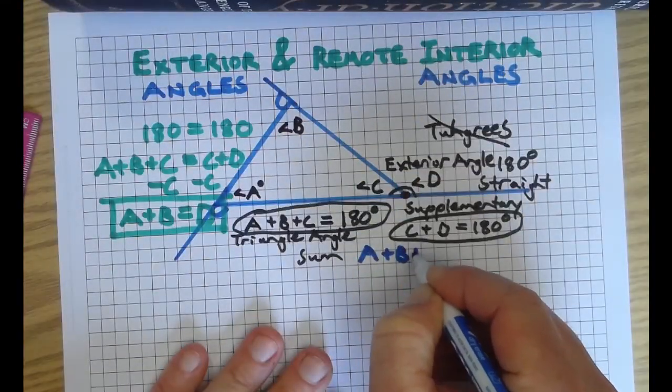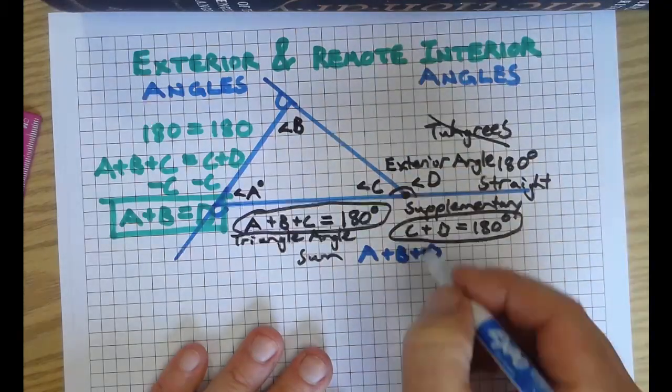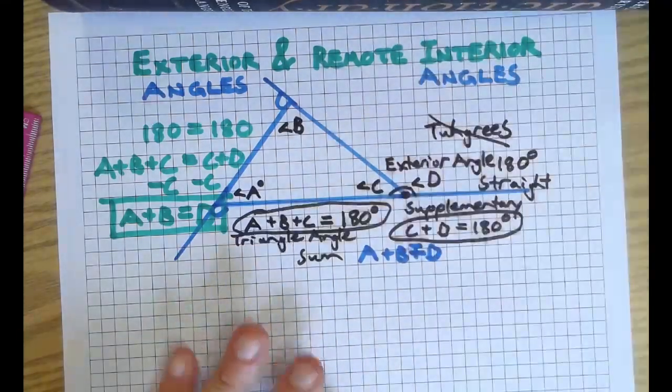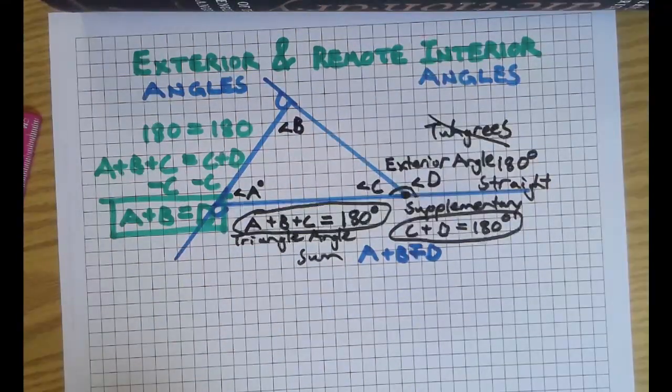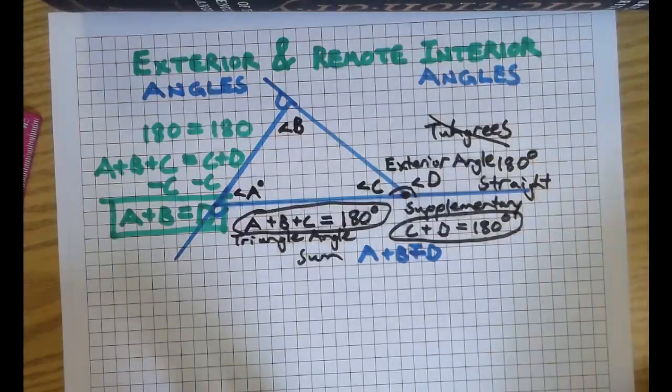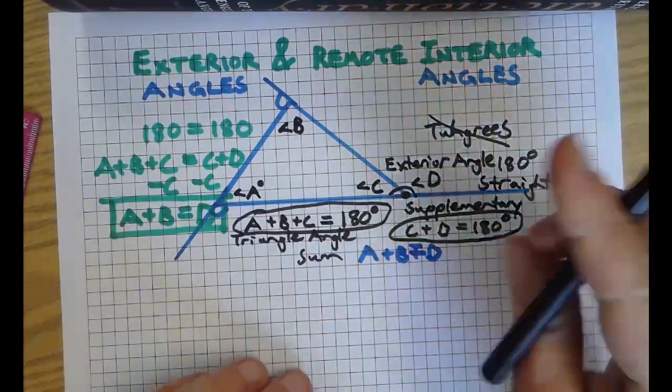Remember, A plus B equals D. We're going to keep this on one page. Equal sign. Okay, so exterior angles happen all the time, and every time they happen, that's where the remote comes in.